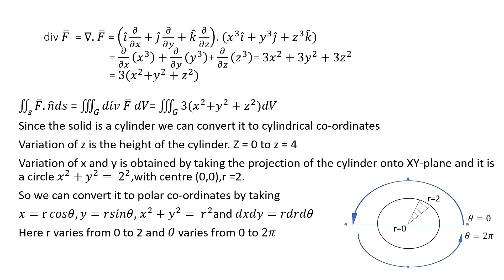Substituting into the formula, the double integral over S of F dot n dS equals the triple integral over G of 3(x² + y² + z²) dV. Since the solid is a cylinder, we convert to cylindrical coordinates. The variation of z is from 0 to 4. The projection onto the xy-plane is the circle x² + y² = 4, with center (0,0) and radius 2. Converting to polar coordinates: x = r cosθ, y = r sinθ, x² + y² = r², and dx dy = r dr dθ.